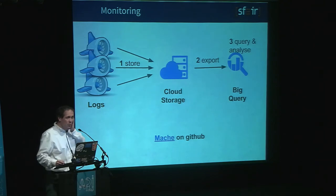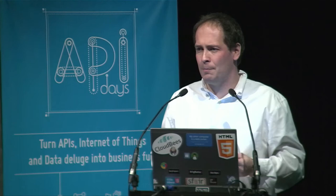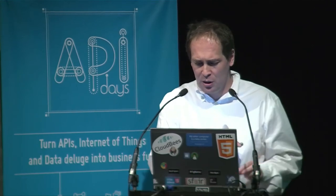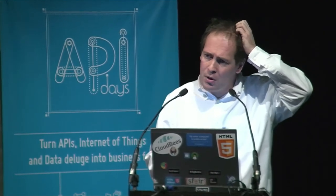One last thing: monitoring. When you're running a service-oriented architecture with many services calling each other, you need to know what's going on and debug across logs. Every App Engine application has its own logs. What you can do is aggregate all logs from all your applications, store them for long-term storage on Google Cloud Storage, export to Google BigQuery, and query your logs in real time. There's an open-source project on GitHub from a company called Stripe that we're looking into. That's all — thank you.